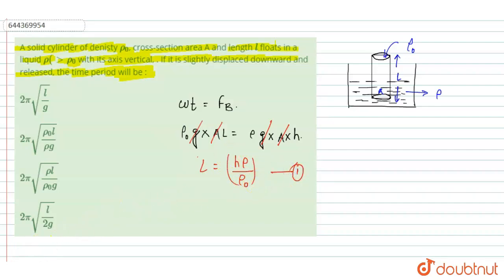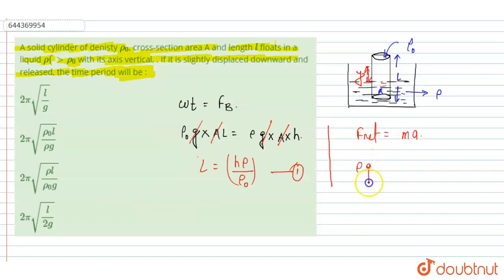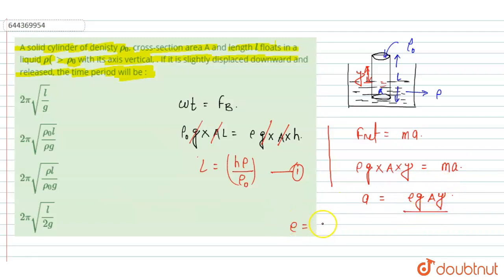Now we displace the cylinder by a length Y. Then F net equals M times acceleration. The restoring force equals rho times G times V, where volume is A times Y. So the acceleration equals rho G times Y divided by mass. Mass can be written as rho naught times V, which equals rho naught times A times L.